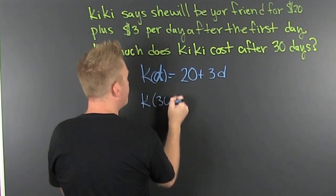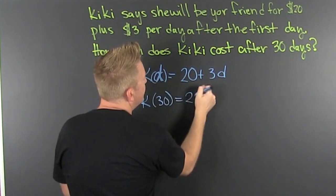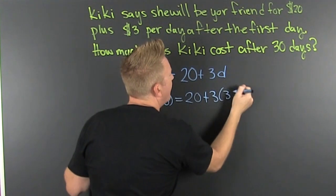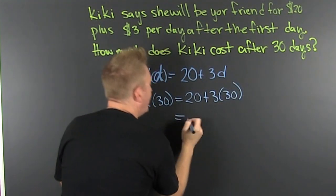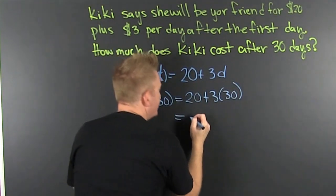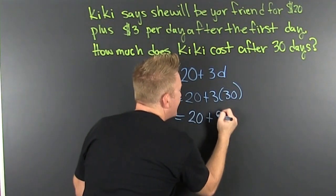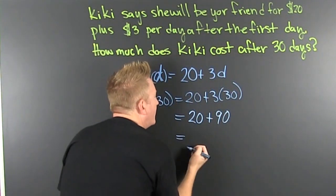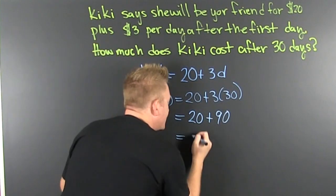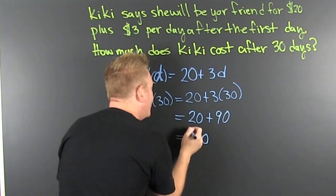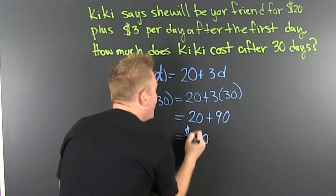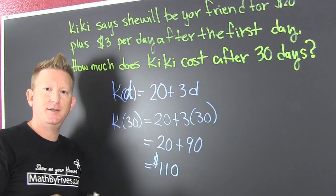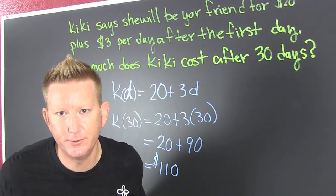So let's see what this adds up to be. We're looking for Kiki at 30, and that's going to be $20 plus three times 30. So a month of Kiki's friendship is going to be 20 plus 90, which means it's going to cost you $110 for Kiki to be your friend. It's probably going to cost your sanity too.